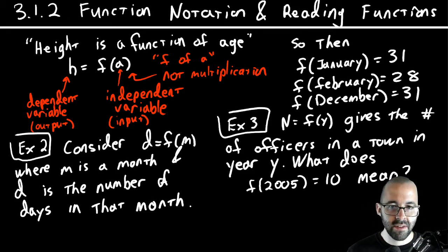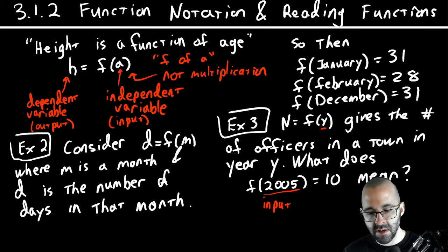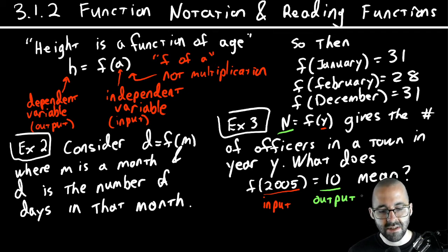So input, that's the y, that's our independent variable, that's our input. This is telling us that y is 2005. Our output, the n, the thing outside of the parentheses, that is our output, that is n, the number of officers. So this is saying that when the input is 2005, the output is 10.